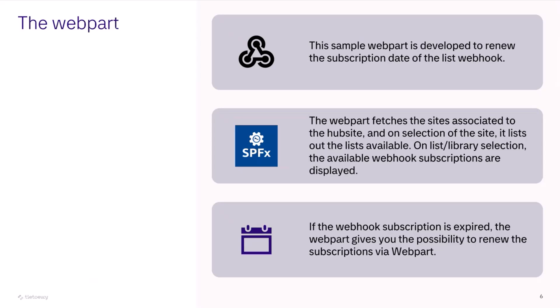This web part sample is developed to renew the subscription date of list webhooks. The idea is that the web part is set at hub level, fetching all sites associated to the hub along with their lists. On list or library selection, the available webhook subscriptions are displayed accordingly. If a webhook is expired, the web part gives us the possibility to renew the subscription.